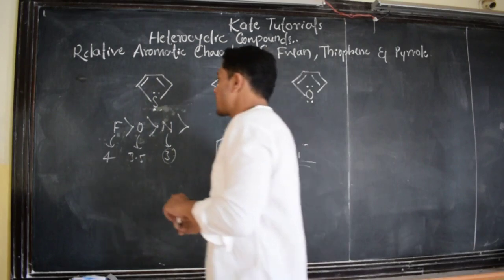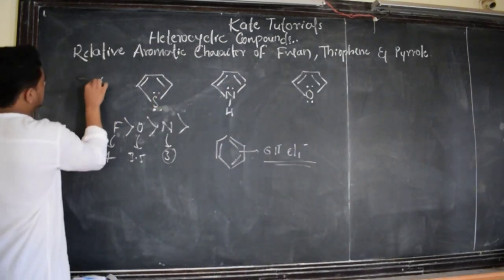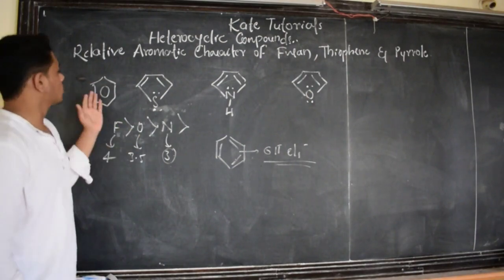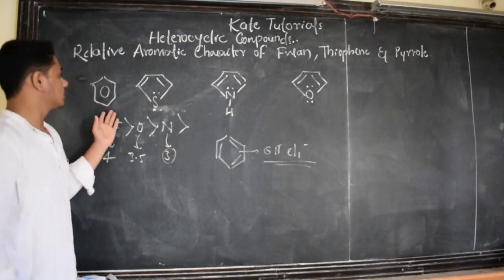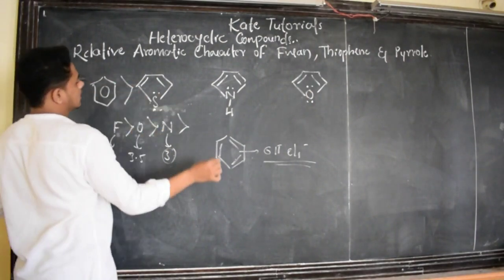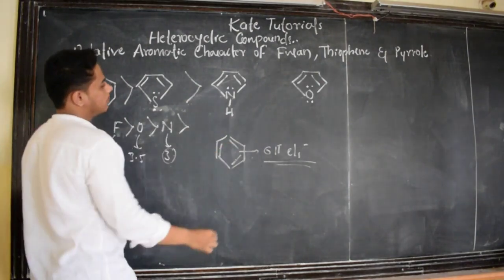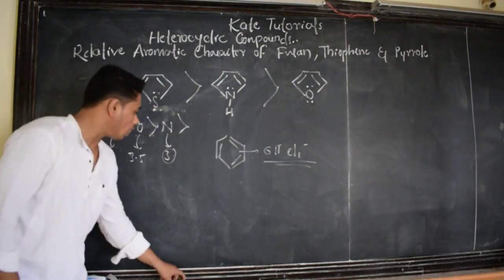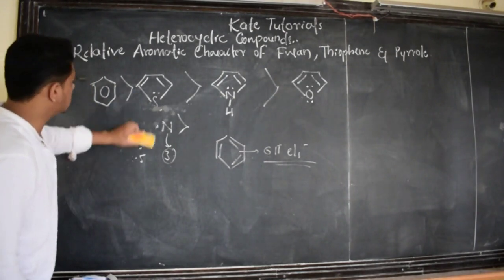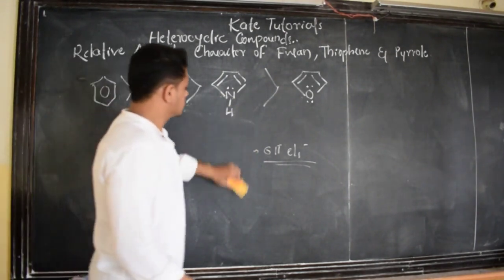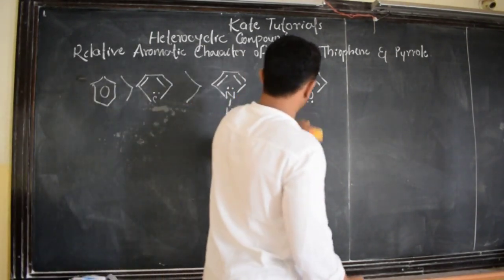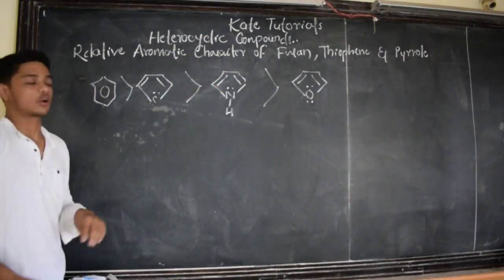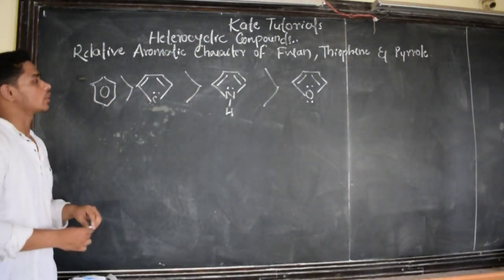So the order of aromatic character is: benzene comes first because it is totally aromatic, followed by thiophene, followed by pyrrole, and followed by furan. This is the order of aromaticity.